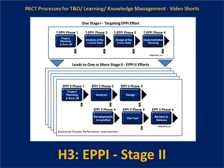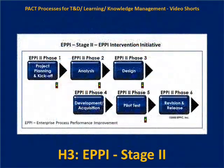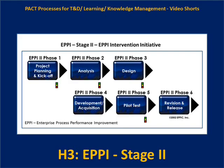In Stage 2, we're bringing all of that to life — putting all of those things in place and doing the improvement interventions necessary. The planning in Stage 1's fourth phase overlaps mightily with the first phase of EPI Stage 2. EPI Stage 2 is about intervention initiatives. There's an initial project planning and kickoff that overlaps with Stage 1's efforts, then there's analysis to get down to the fine nitty-gritty details about what needs to be put in place for these various intervention initiatives.